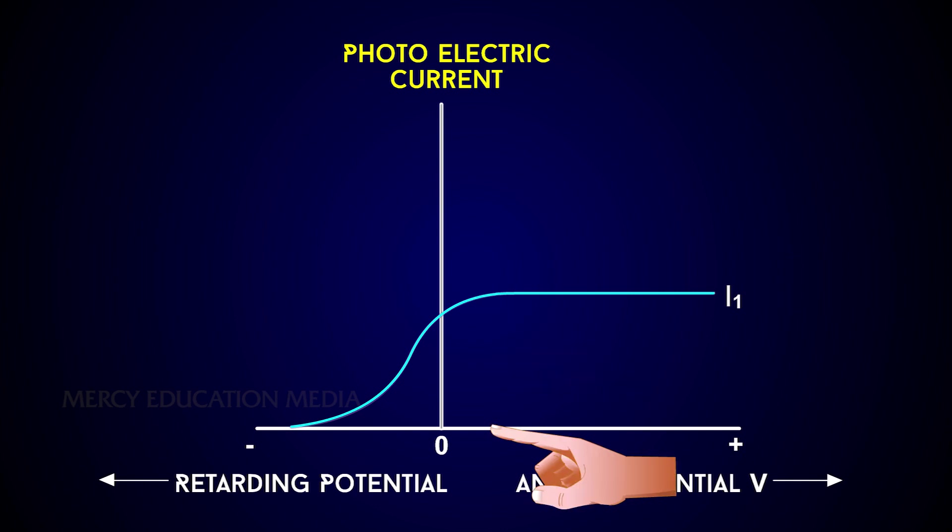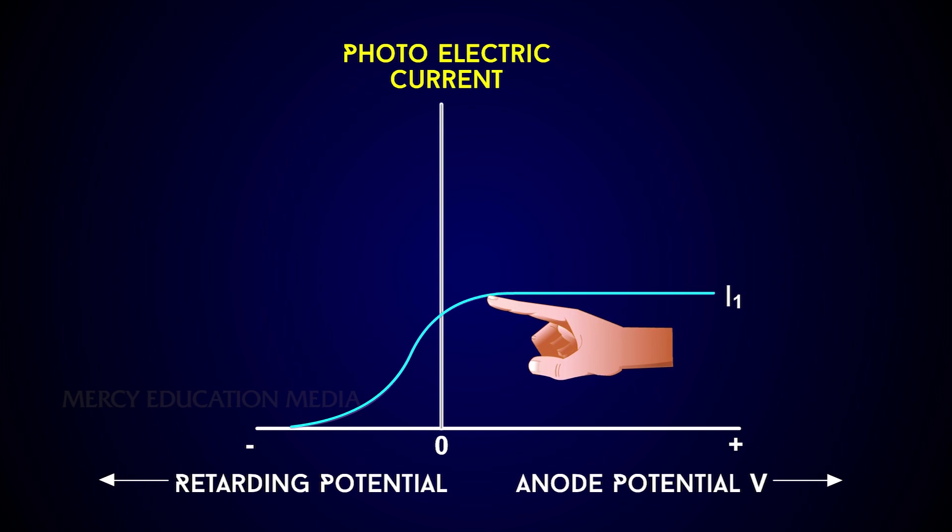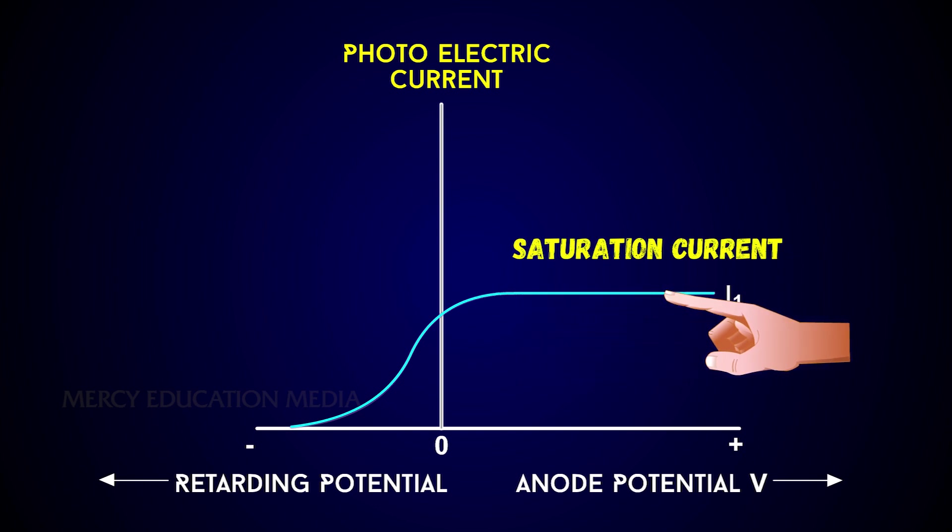However, if the positive potential is further increased such that it is large enough to collect all the photoelectrons emitted from the plate C, the photoelectric current reaches a certain maximum value and this current is known as saturation current.